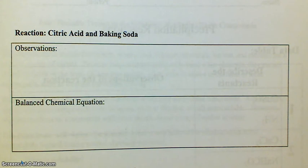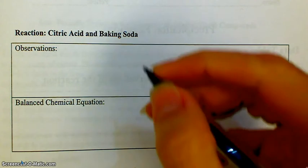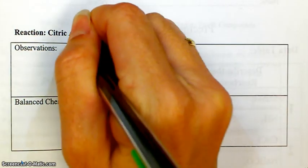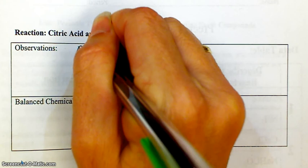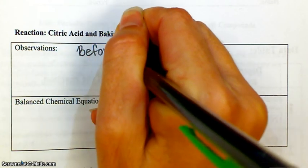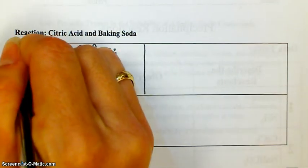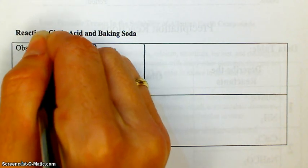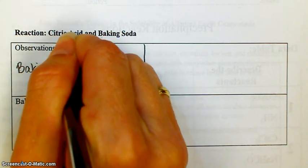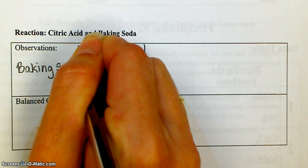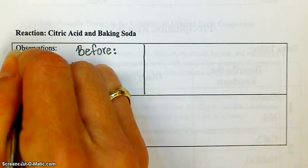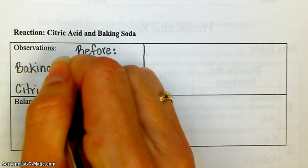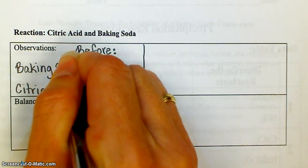And what I need for you to do, if you haven't already done so, is take your observation section again, divide it into before and after. In the before section, your baking soda you should describe as a white powder, and your citric acid you should describe as white grains. So write that down.